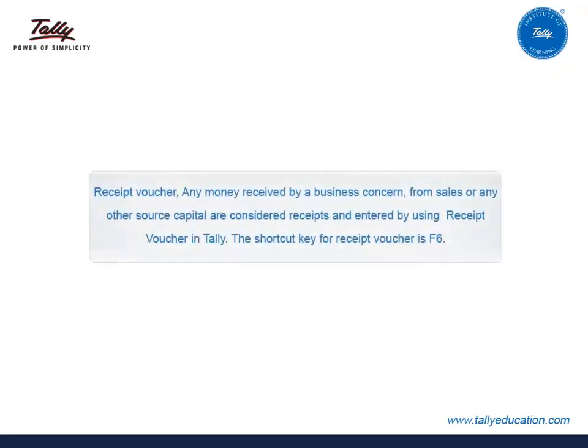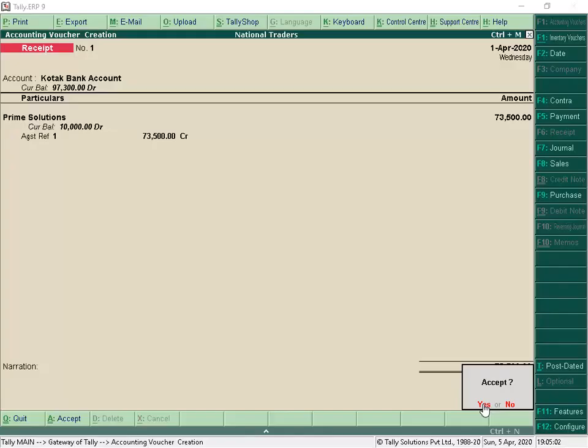Receipt Voucher is used by a business concern to record income received from sales or any other source. Capital receipts are also entered using Receipt Voucher in Tally. The shortcut key for Receipt Voucher is F6. Similar to Payment Voucher, we can record Receipt Voucher in Single or Double Entry mode based on the requirement.